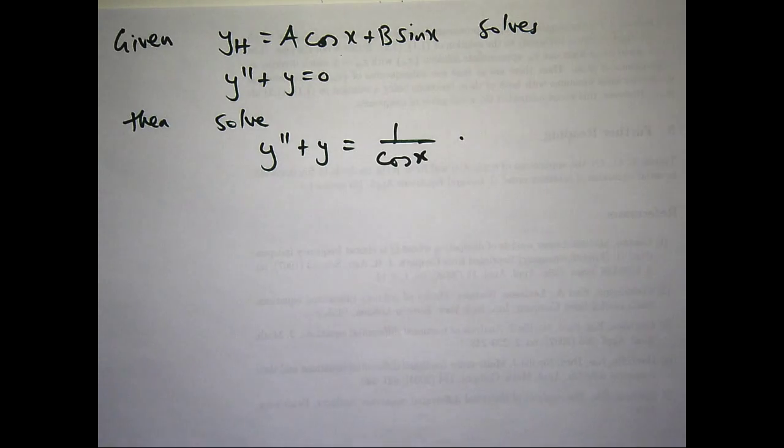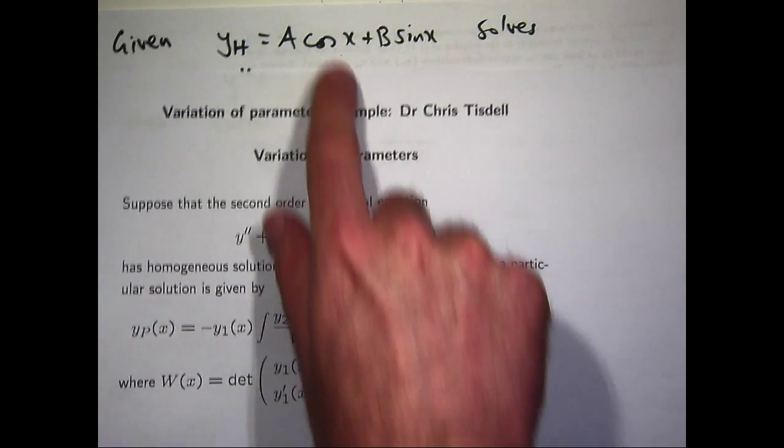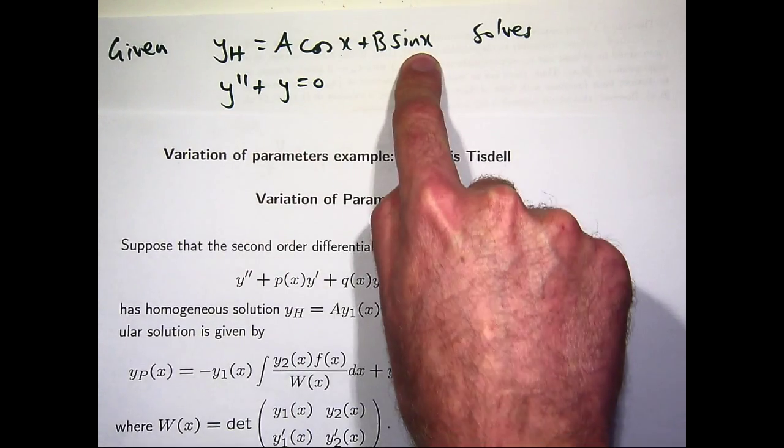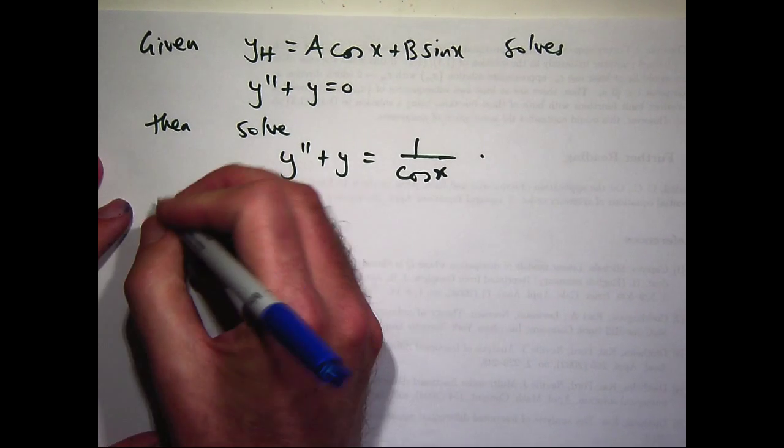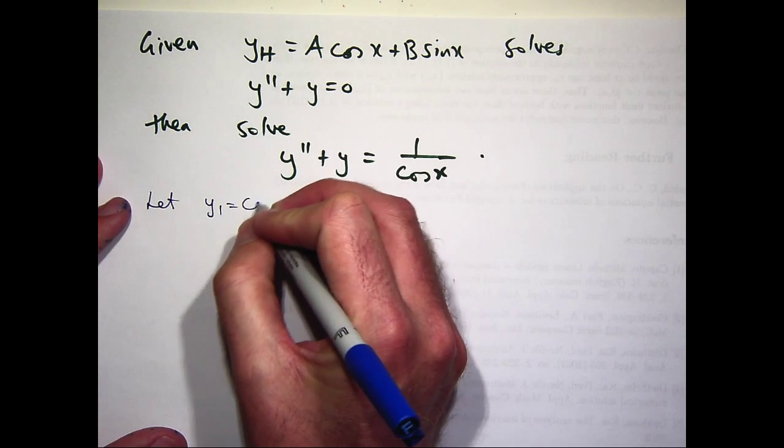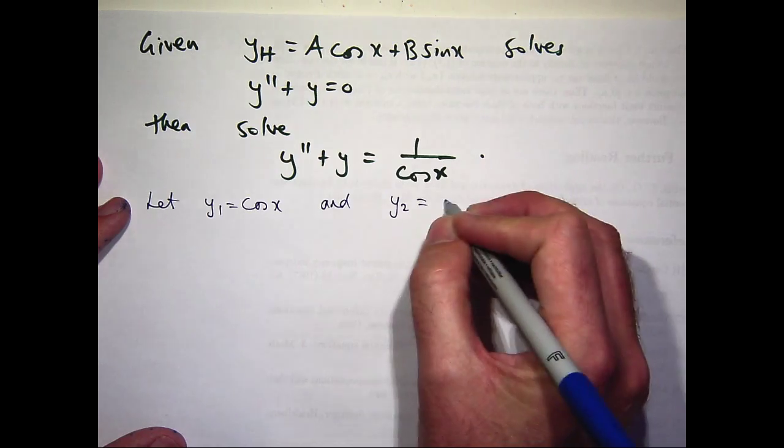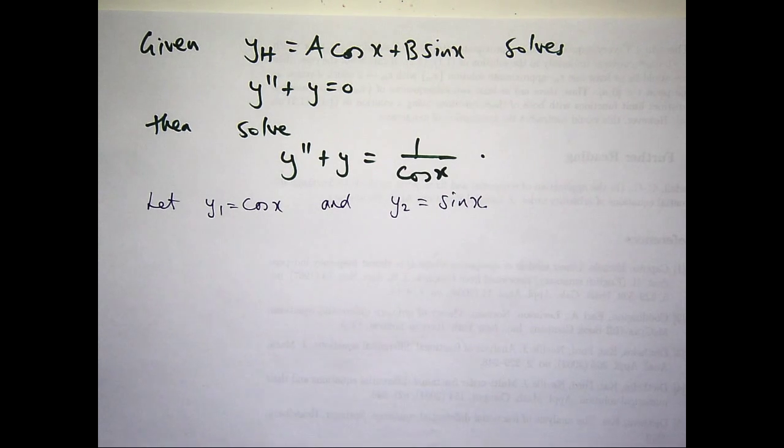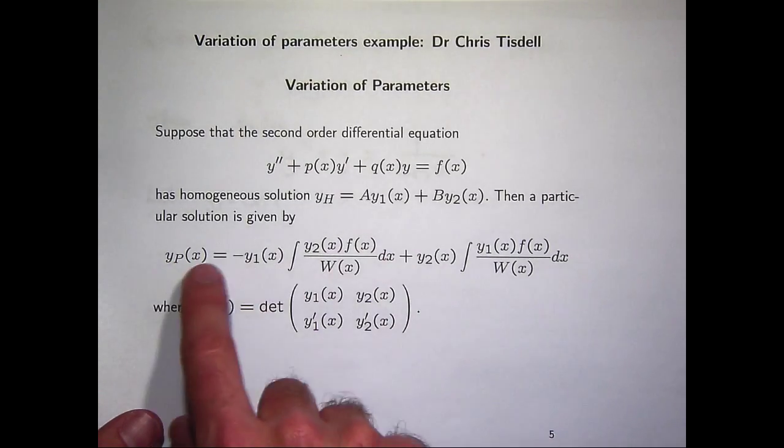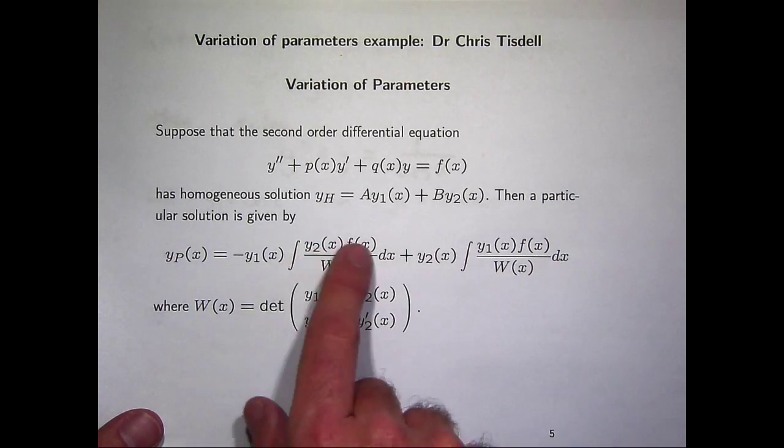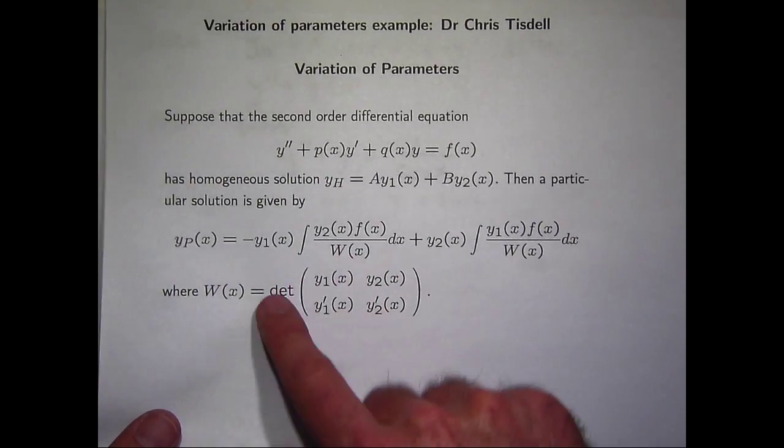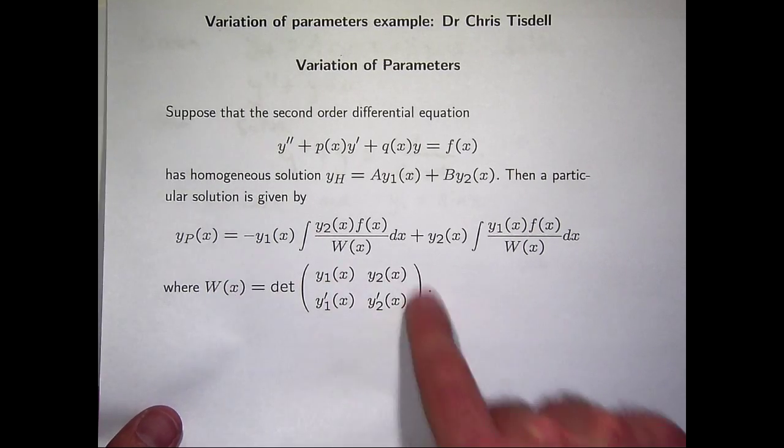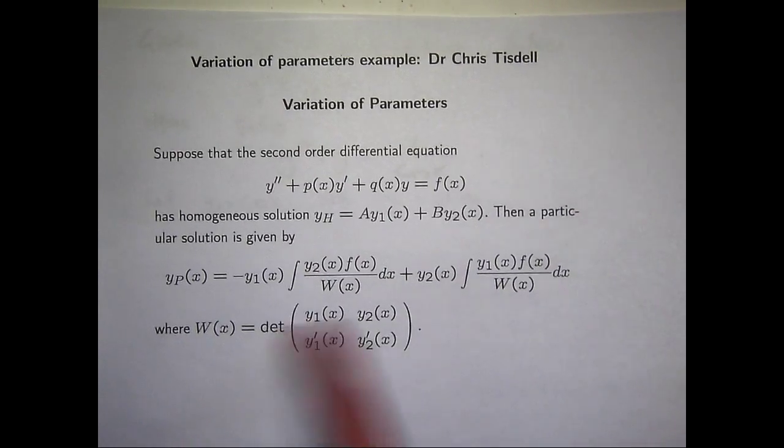So how do we do it? Well, the first thing we want to do is identify our y1 and y2. y1 would be cosine x and y2 would be sine x in this case. Essentially we want to build a particular solution to our problem through these integrals. Now, notice that the formula depends on the Wronskian. So the first thing I like to do is actually calculate the Wronskian of my y1, of this matrix.